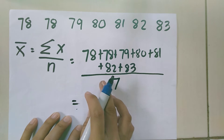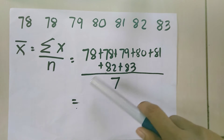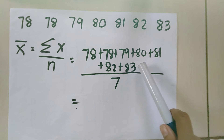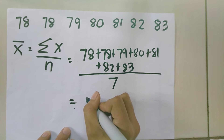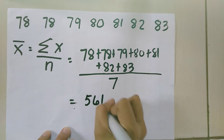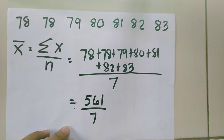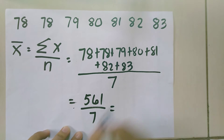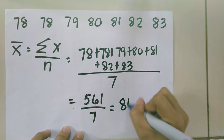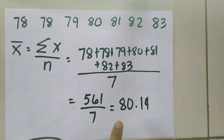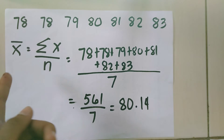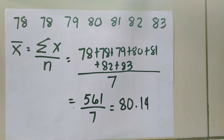Let us add our data: 78 plus 78 plus 79 plus 80 plus 81 plus 82 plus 83. That equals 561. 561 divided by 7 equals 80.14. So 80.14 is the mean for this set of data.